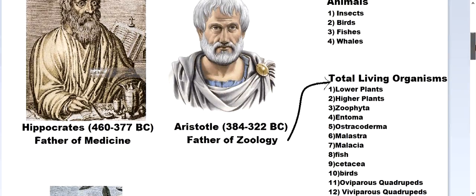Aristotle, the father of Zoology, did a great job classifying all living organisms into 12 groups: lower plants, higher plants, zoophyta, entoma, ostracoderma, malastra, malasia, fish, cetacea, birds, oviparous quadrupeds, and viviparous quadrupeds.